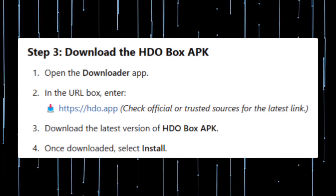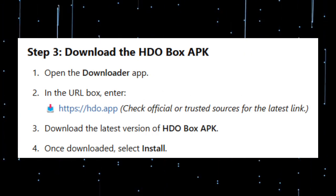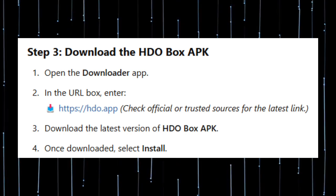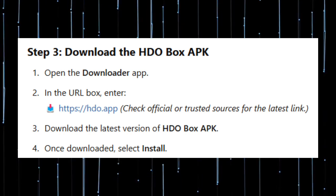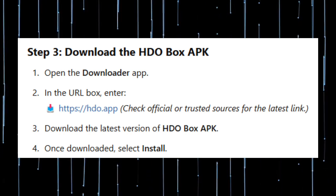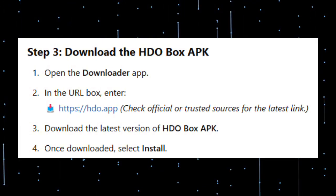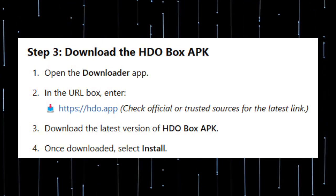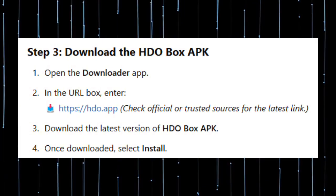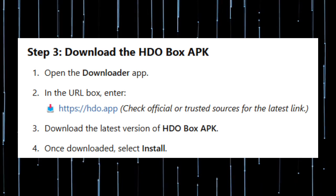Step 3: Download the HDO Box APK. Open the Downloader app and in the URL field, enter HDO.app and check official or trusted sources for the latest link. Download the latest version of the HDO Box APK, and once downloaded, select Install.